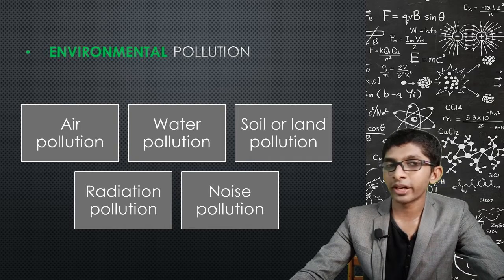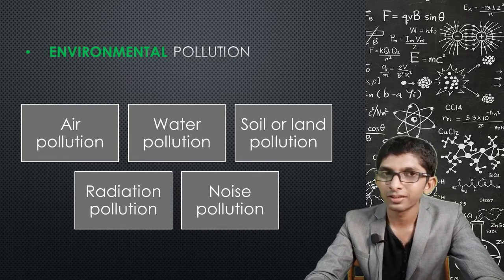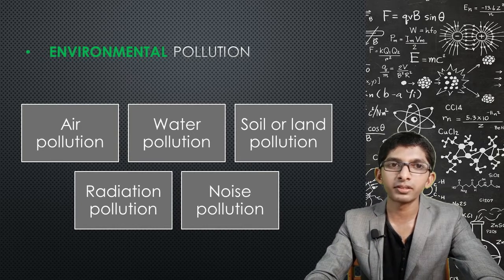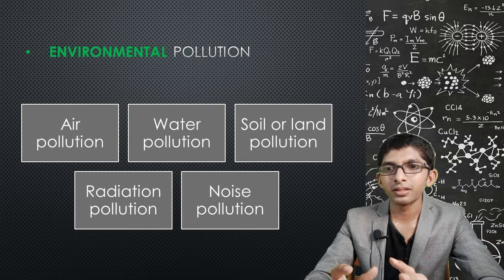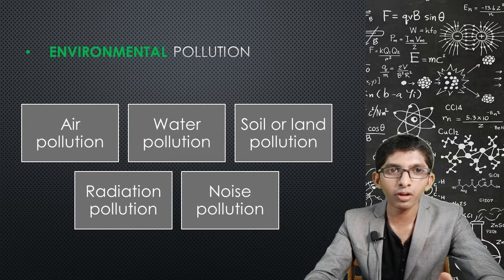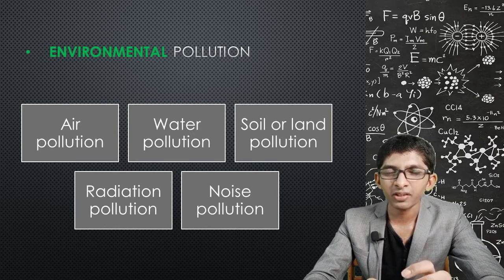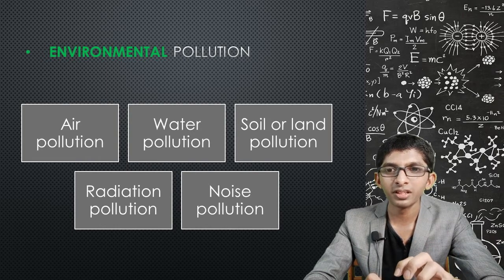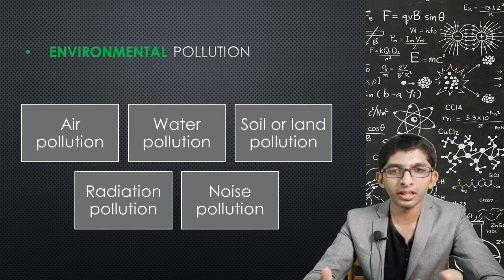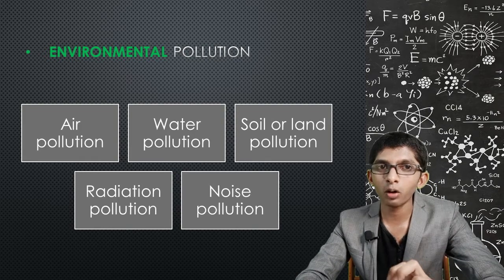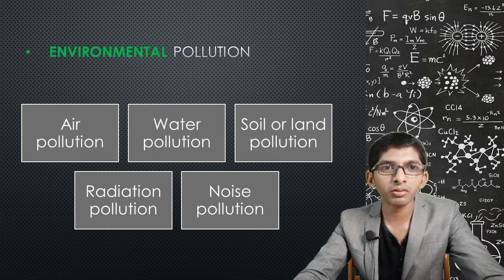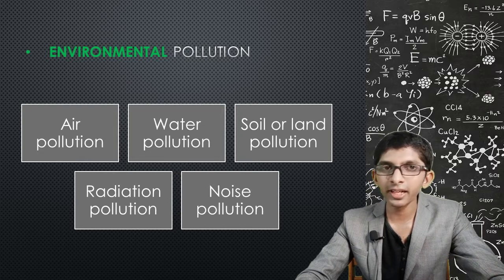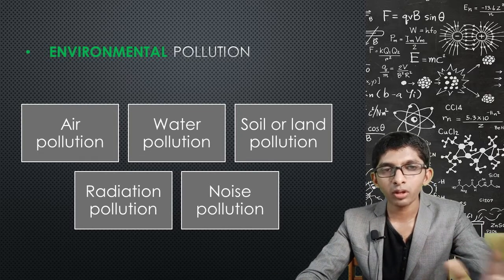Radiation pollution involves nuclear energy waste and nuclear radiation. Nuclear waste can persist and cause radiation contamination for thousands of years. An example is the Chernobyl nuclear power plant disaster, after which the area remained polluted by radiation for thousands of years, making it dangerous for both animals and humans.